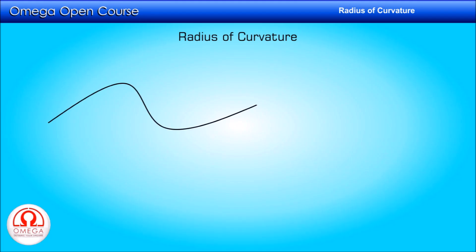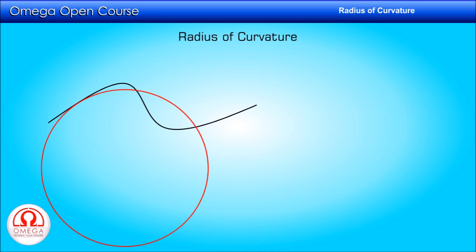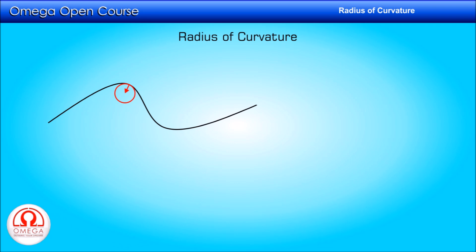Let us take any curved path. Each small segment of this curve can be considered to be a part of a circle. The centre of this circle is called the centre of curvature of the curve at that point, and the radius of the circle is called the radius of curvature of the curve at that point. Physically, more the path is curved at any point, lesser is its radius of curvature at that point.